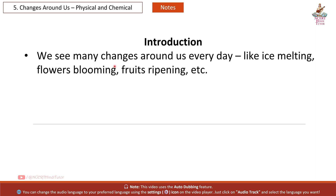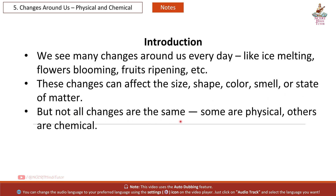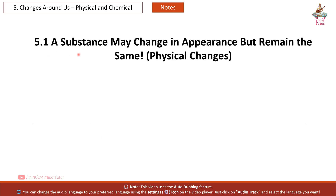Introduction: We see many things around us every day, like ice melting, flowers blooming, fruits ripening, etc. These changes can affect the size, shape, color, smell, or state of matter. But not all changes are the same — some are physical, others are chemical. Section 5.1: A substance may change in appearance but remain the same.